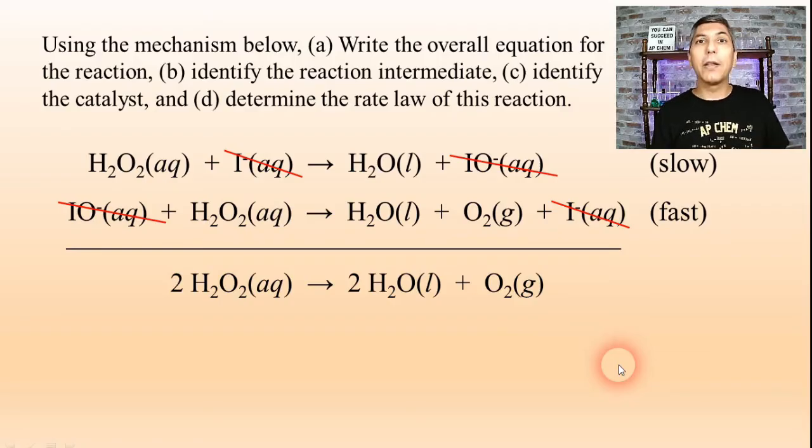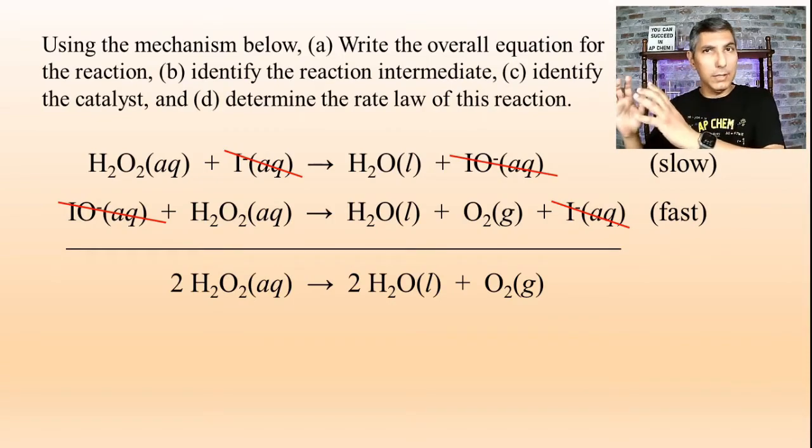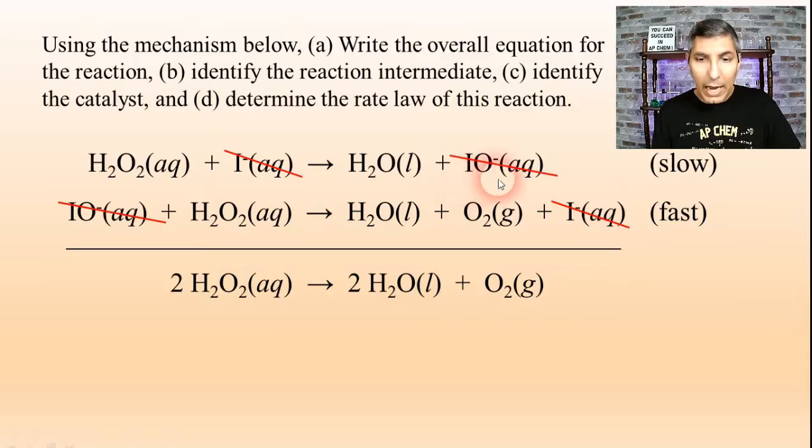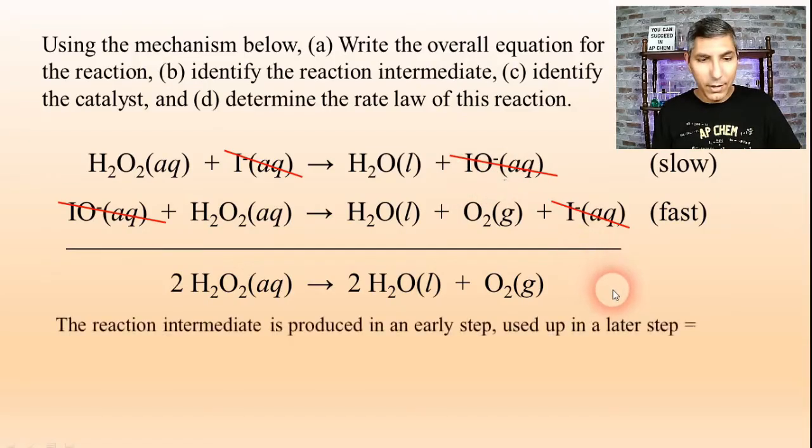Now part B is identify the reaction intermediate. Now like we said in the last video, a reaction intermediate is a substance that's produced in an early step that's used up in a later step. And so to me that seems to be IO⁻. That is the reaction intermediate.